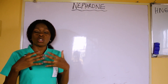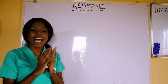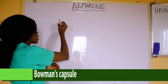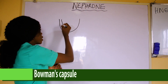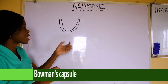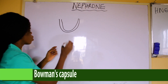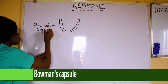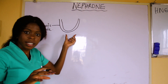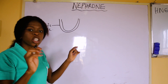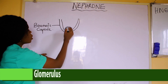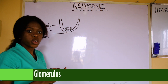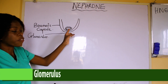Whenever I'm in the exam hall and they ask me to draw the nephron, the first thing that comes to mind is that the nephron has what looks like a cup. That cup is known as the Bowman's capsule. So let's draw the cup first. As we are drawing, we are labeling. This cup is known as the Bowman's capsule. Inside this cup, there is a filter — a permeable membrane known as the glomerulus. So we place the glomerulus inside the Bowman's capsule.